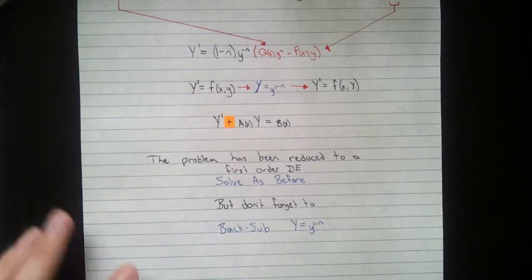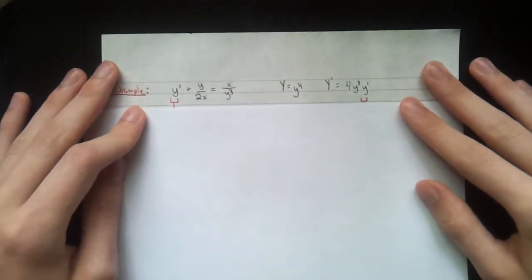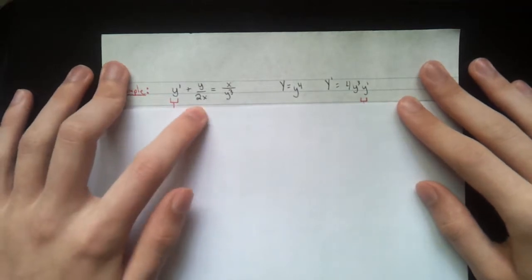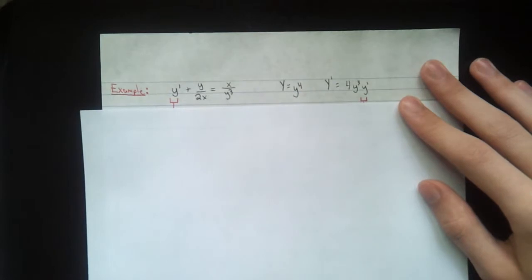Let's take a look at an example. So here's our example. y prime plus y over 2x equals x over y cubed.